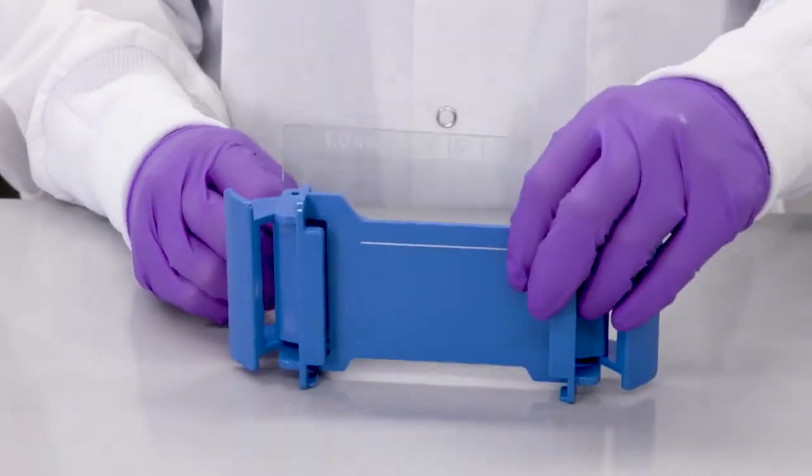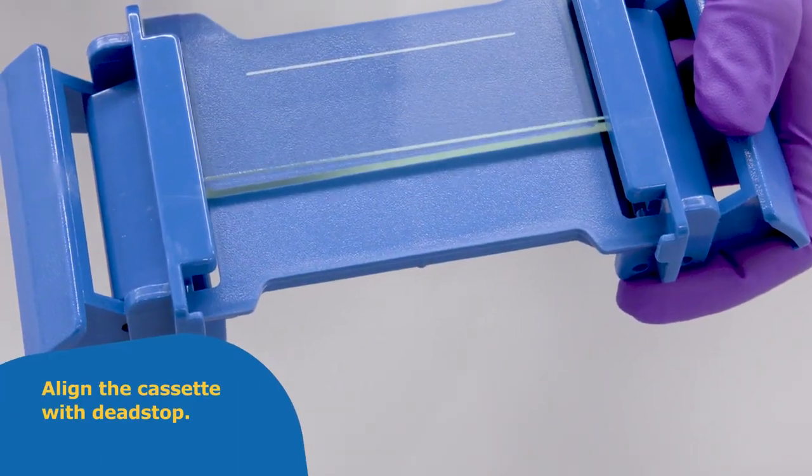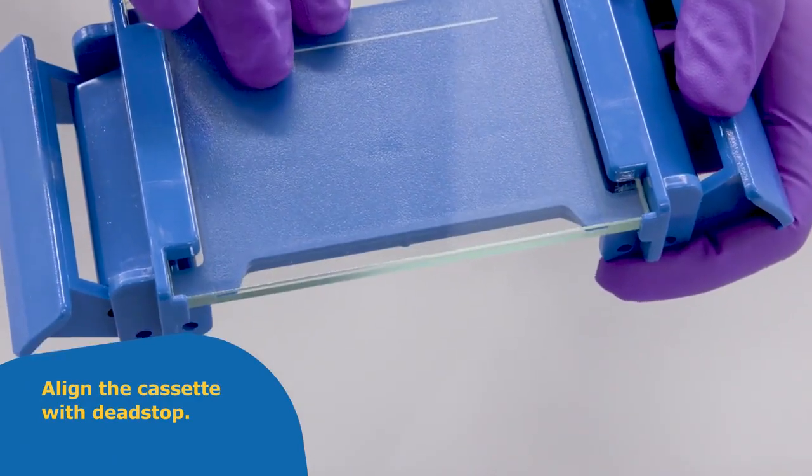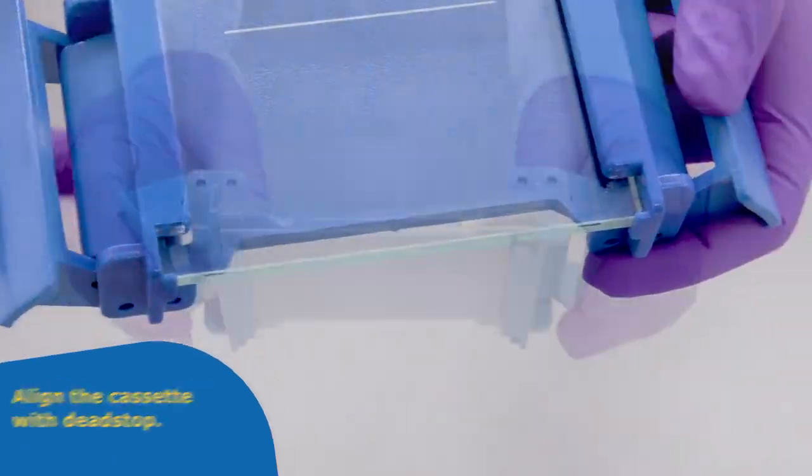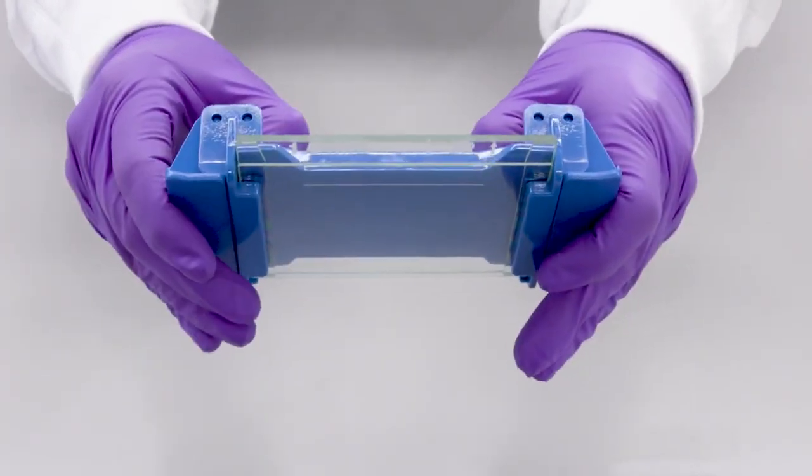With the side clamps open, slide the cassette into the caster frame until it is aligned on the dead stops located on the bottom of the frame. Secure the glass cassette by swinging the side clamps inward.